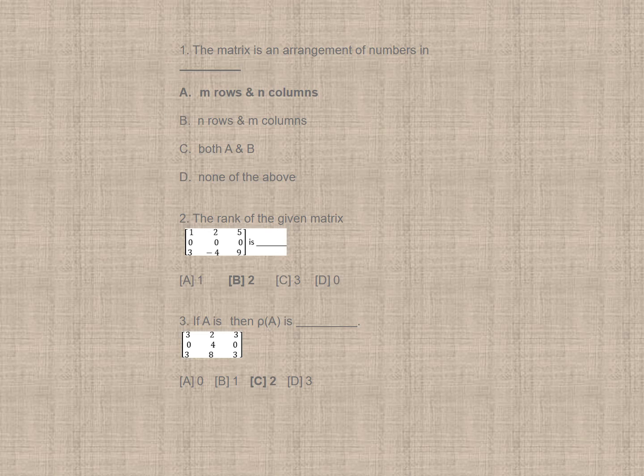Question number 1. The matrix is an arrangement of numbers in, so your correct option is A, M rows and N columns. Question 2, the rank of the given matrix is, here it is given 1, 2, 5, 0, 0, 3, minus 4, 9, so your correct option is B, 2.